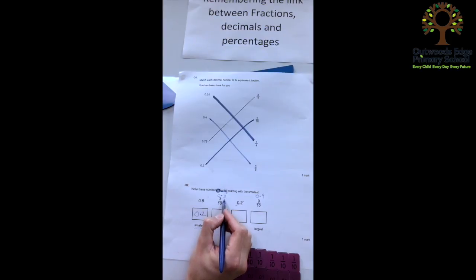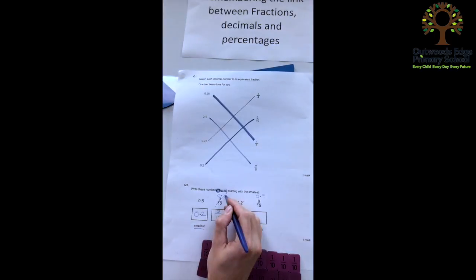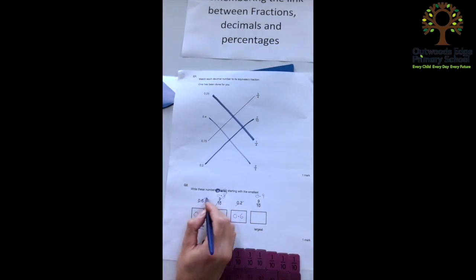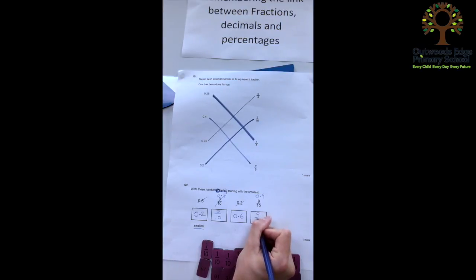0.3 is the next smallest, so I'm going to write that as 3 tenths, just to show off my understanding. Then I've got 0.6, which means 9 tenths is the largest number in that order there.